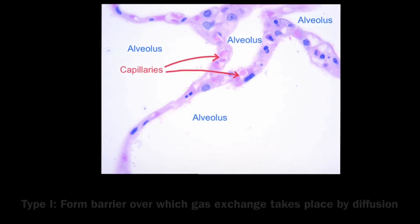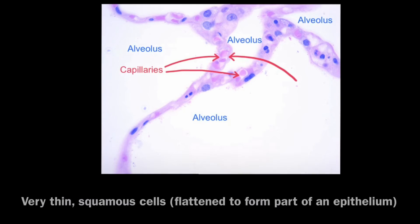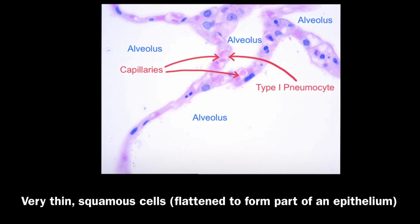Type 1 pneumocytes form part of the barrier over which gas exchange occurs by diffusion, and this is because they're adapted by being thin squamous cells. To be squamous means to be flattened and to form part of an epithelium.